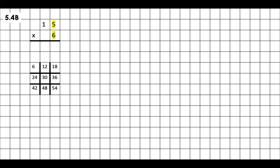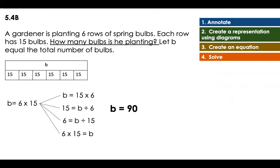Now let's solve. We're going to solve 15 times 6. I'm going to do a tic-tac-toe. Six times five is equal to 30 — put down the zero and regroup the three. Six times one is equal to 6, plus the 3 equals 9. So my answer is 90. 90 what? 90 is the total number of bulbs. I put 90 in place of B, so now all my equations make sense: 90 equals 15 times 6; 15 equals 90 divided by 6; 6 equals 90 divided by 15; 6 times 15 equals 90.